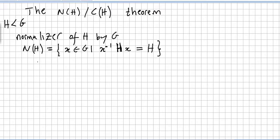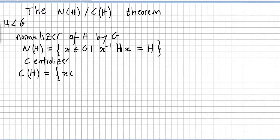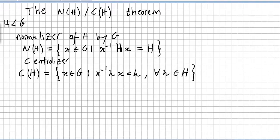The centralizer of H in G is the set of X in G such that X inverse times h times X equals h for all h in the subgroup H.